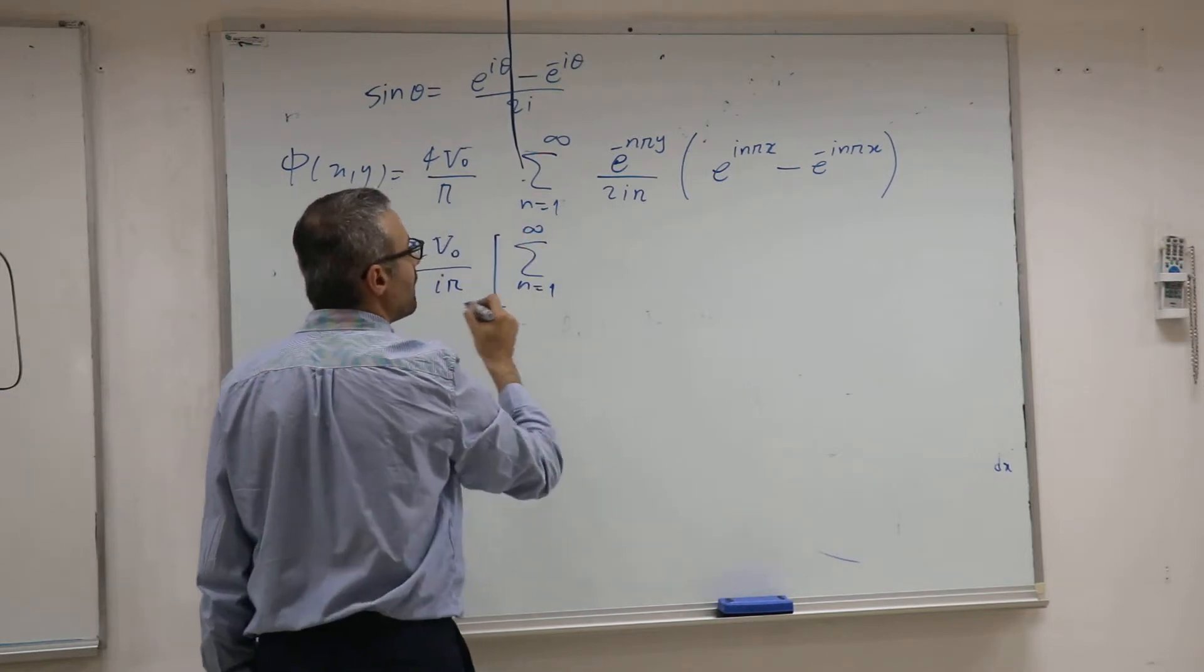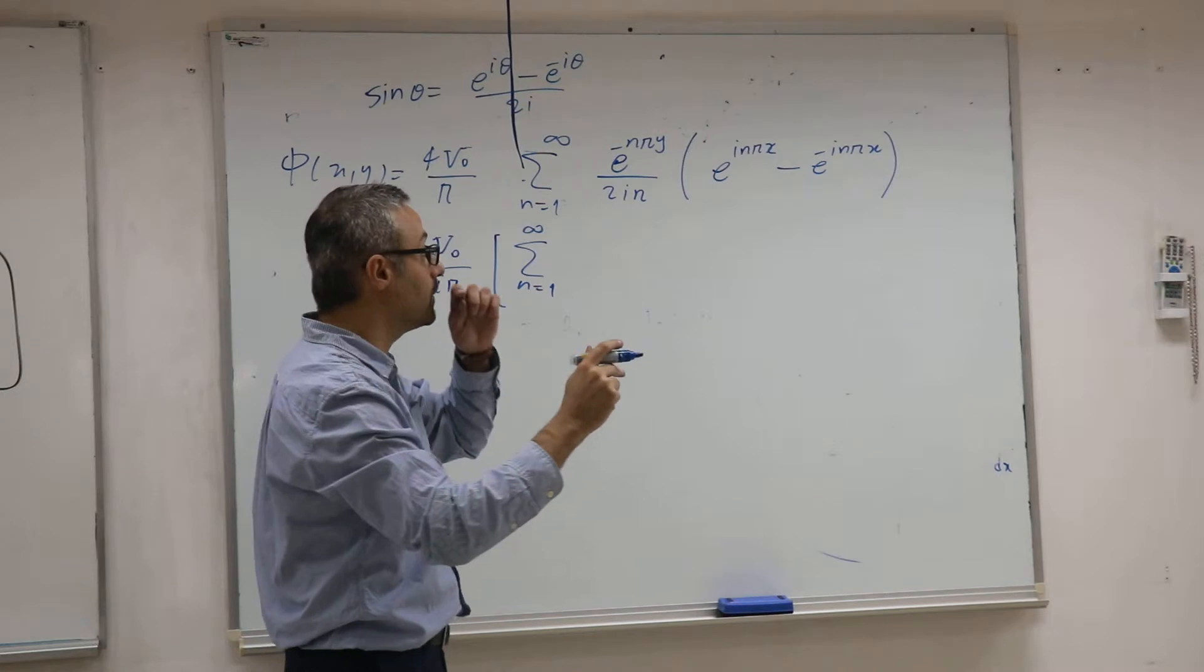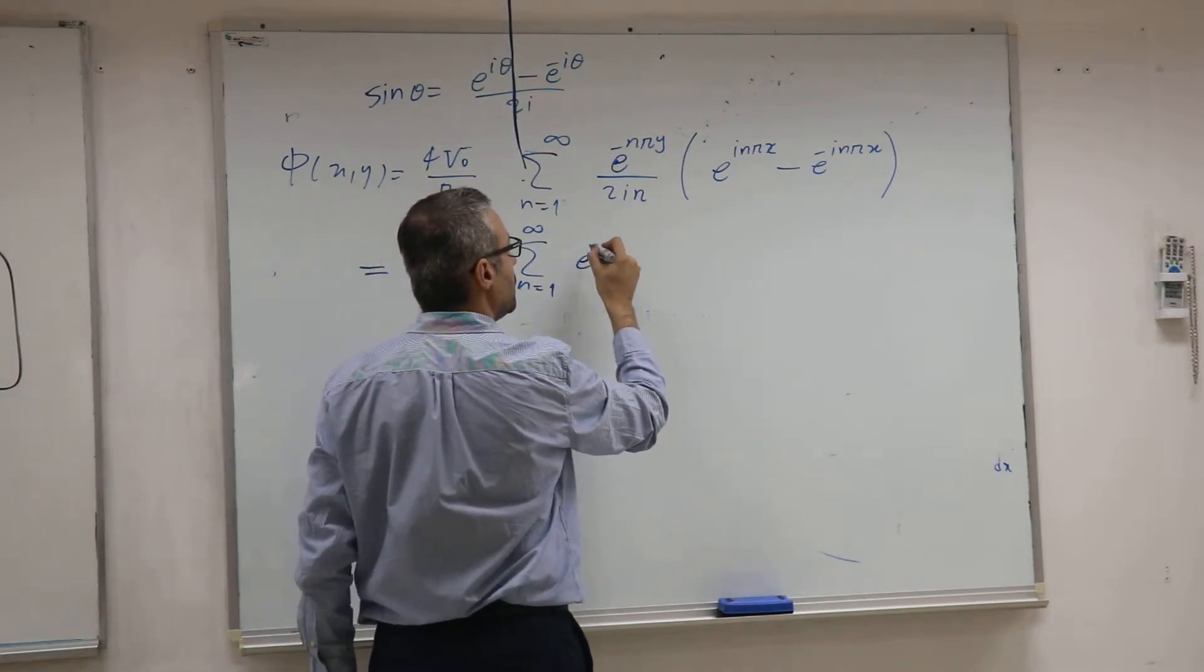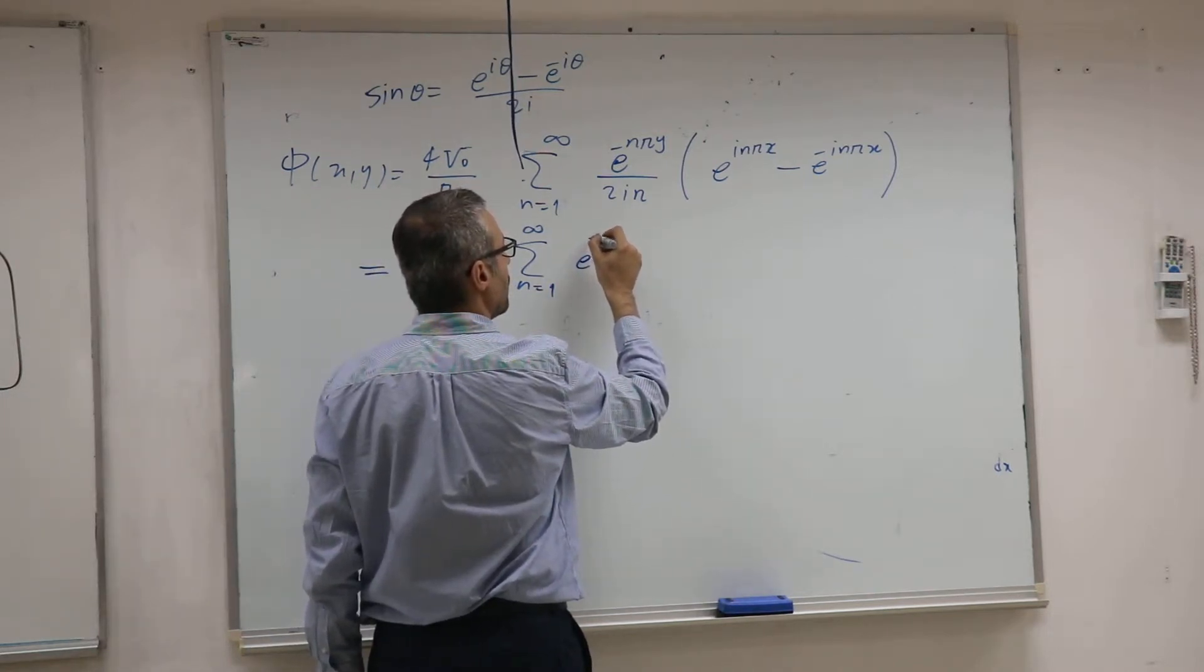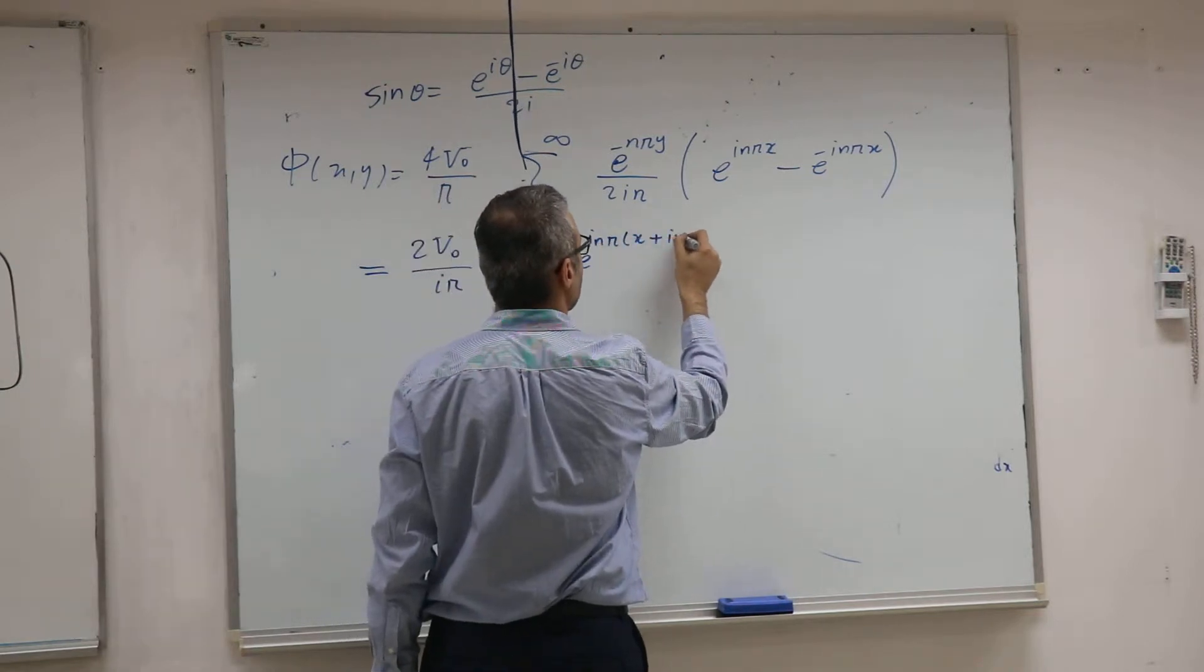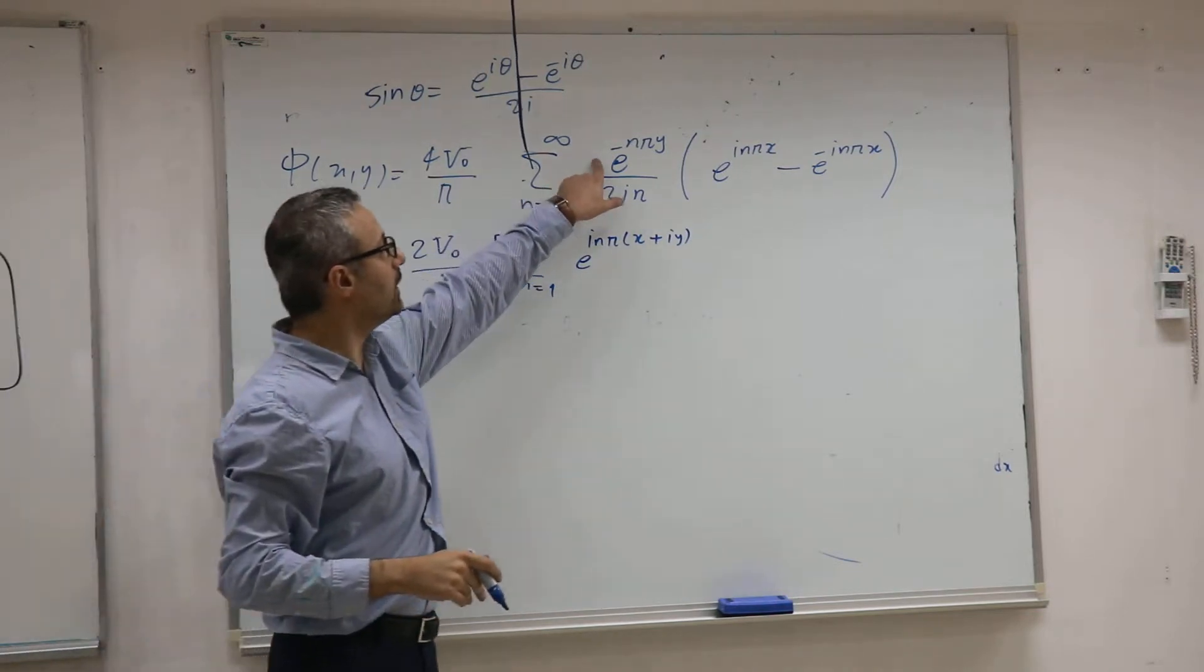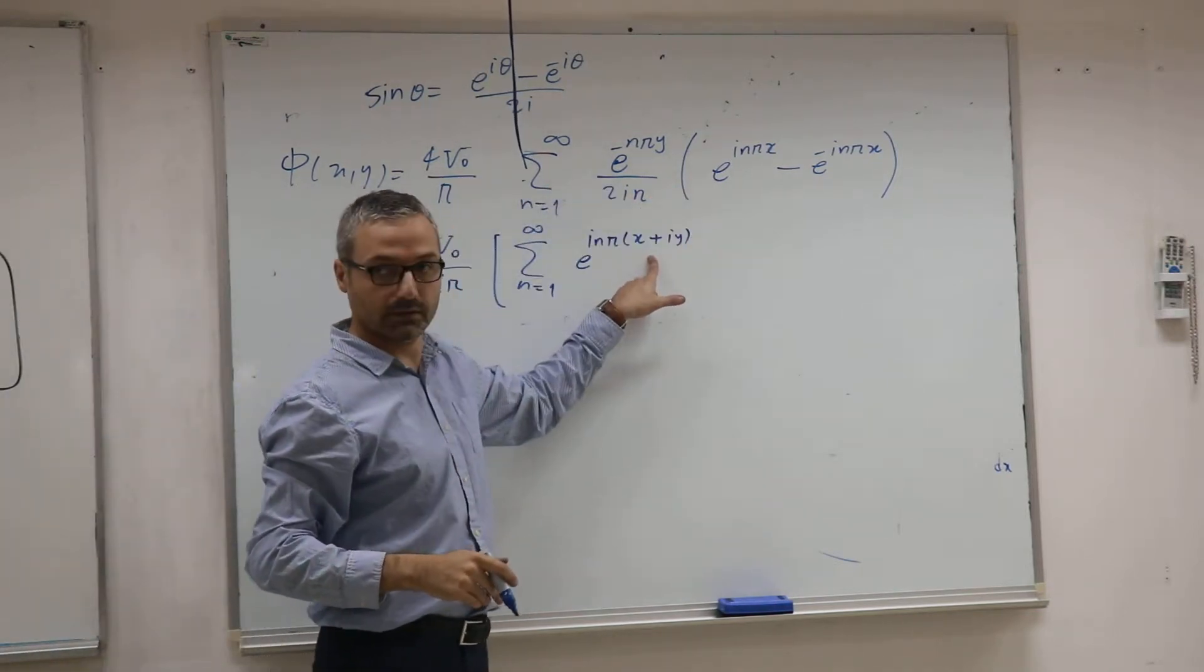Now the benefit is that I have two exponentials, all exponential. Can I put it all together? E^(iNP·X + Y). Can I write that? Just by combining this and this, I can write that. You can check it.